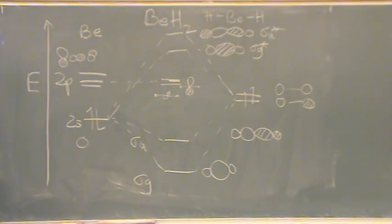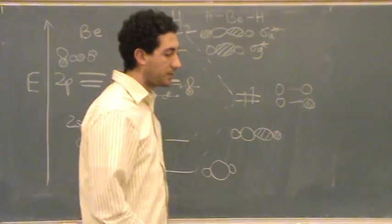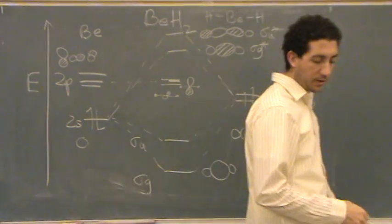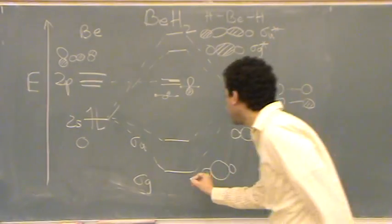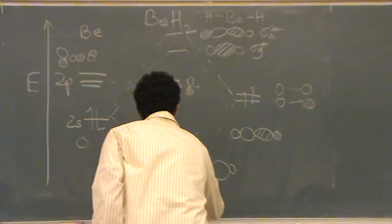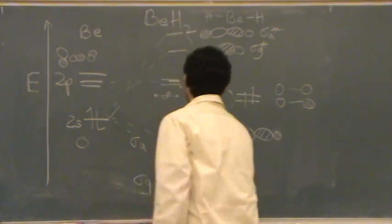Now let's fill in the electrons. There are four electrons total, so I'm going to fill in all four: one, two, three, four.